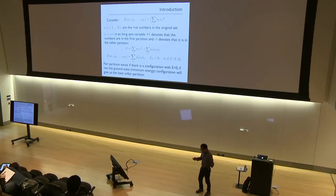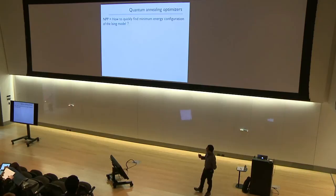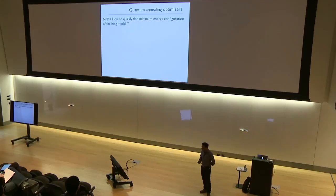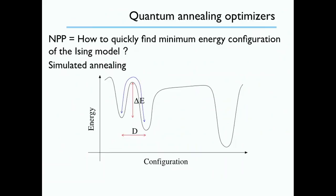Now let's talk about quantum annealing. Problems like the number partitioning problem can be boiled down to finding the ground state of the Ising model. The goal is to find the ground state as fast as possible. One way to do this is simulated annealing: we start at a finite temperature, cool the system down, and at T = 0 the system would be in its ground state. The idea is to simulate this annealing using an algorithm.